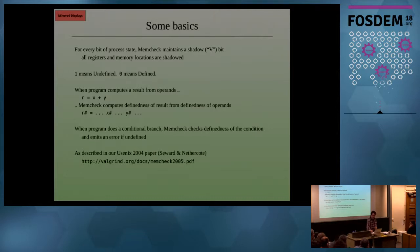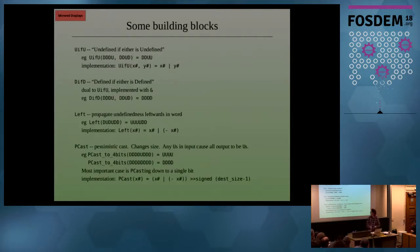So here is some basic building blocks. Our most important building block is UFU, which means undefined if either argument is undefined. So this takes two vectors of definedness bits. Here's an example: I'm writing a four bit vector d, d, d, u, meaning three bits saying defined and the fourth one undefined. And we combine it with this one here, d, d, u, d. So we get two bits which are defined and then two bits which are undefined. And because defined is zero and undefined is one, that means you can just implement it using a standard OR operation.